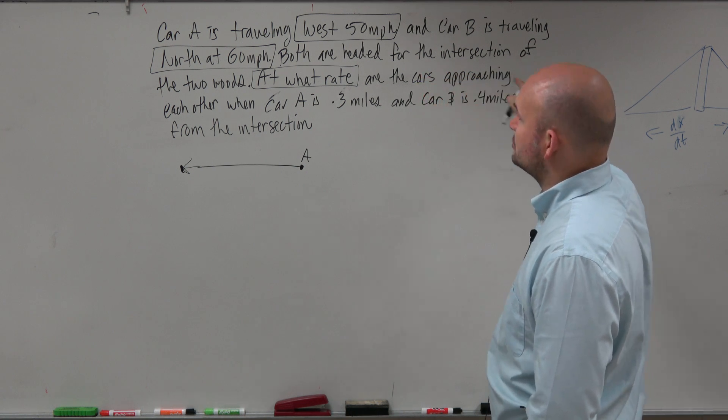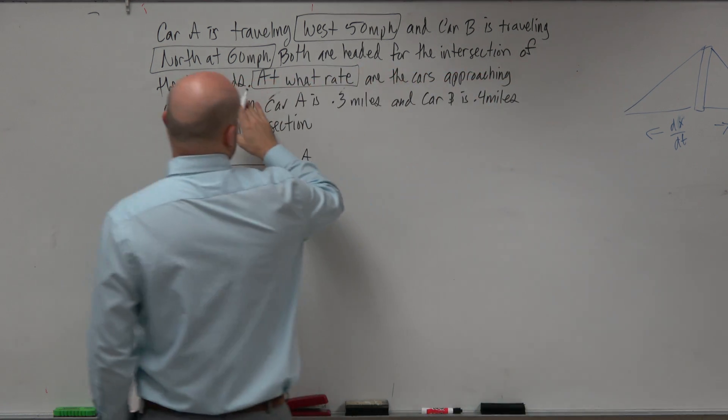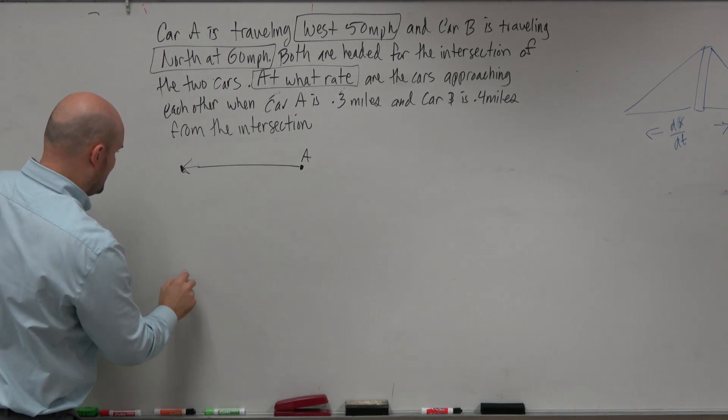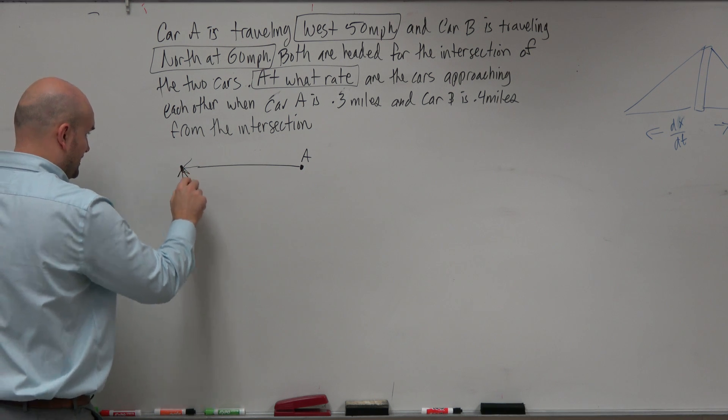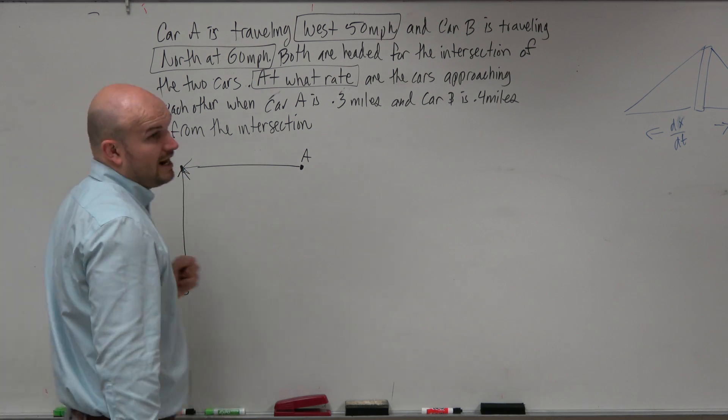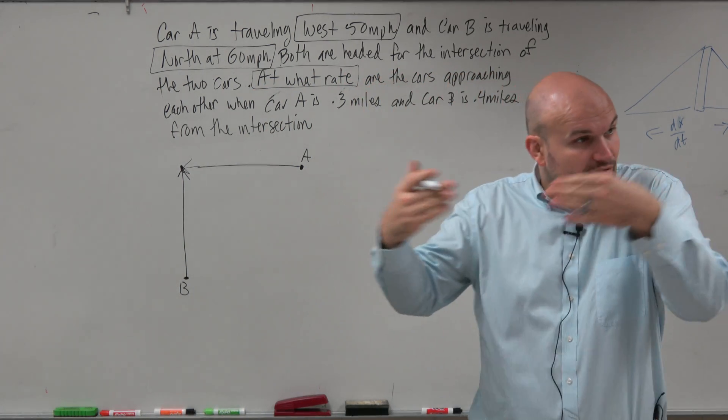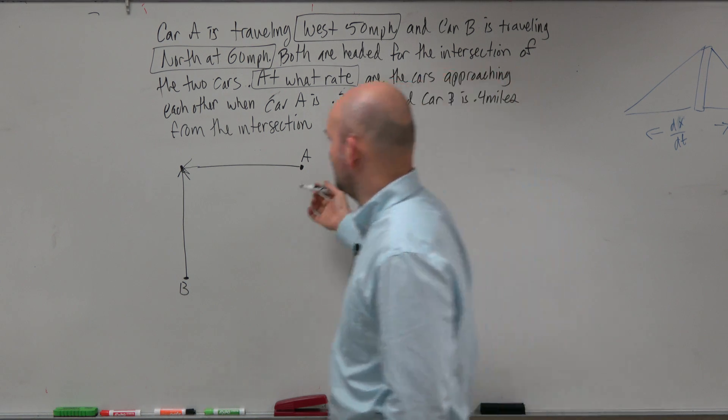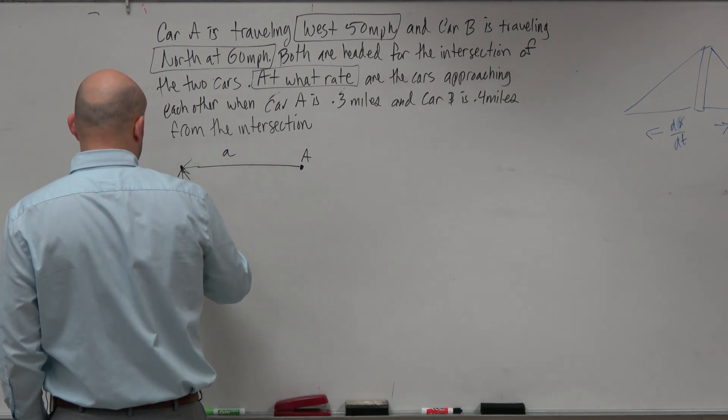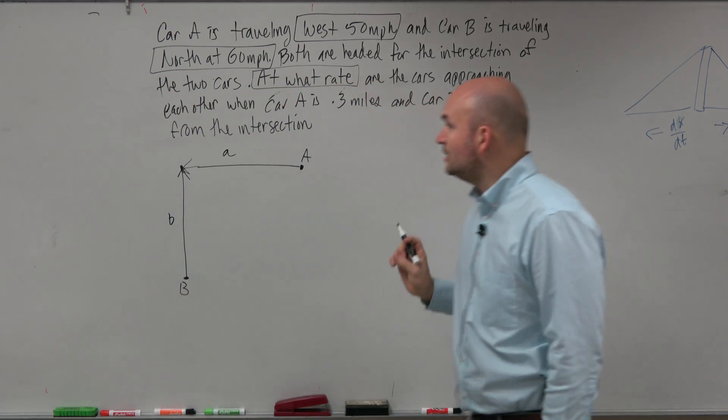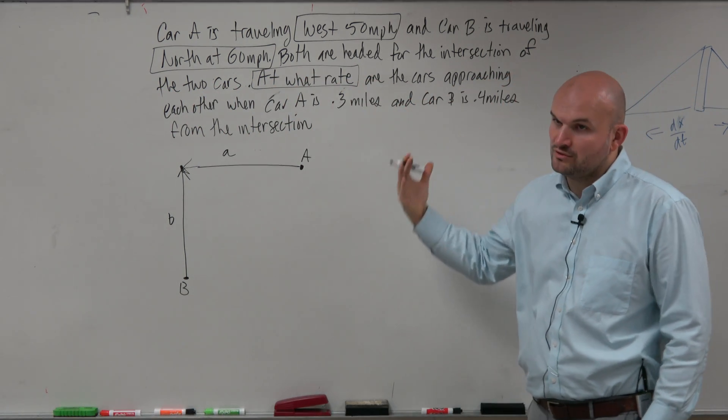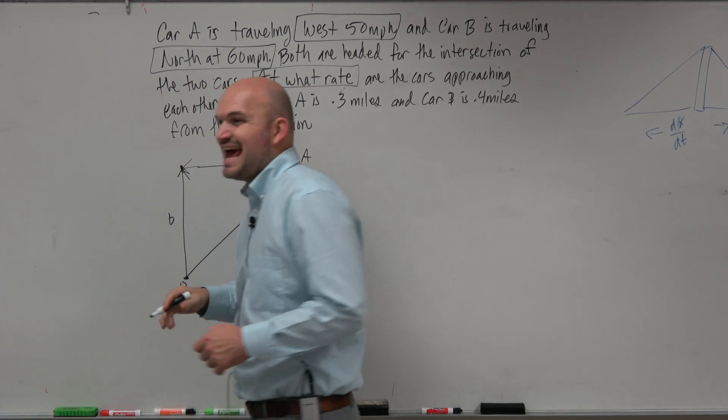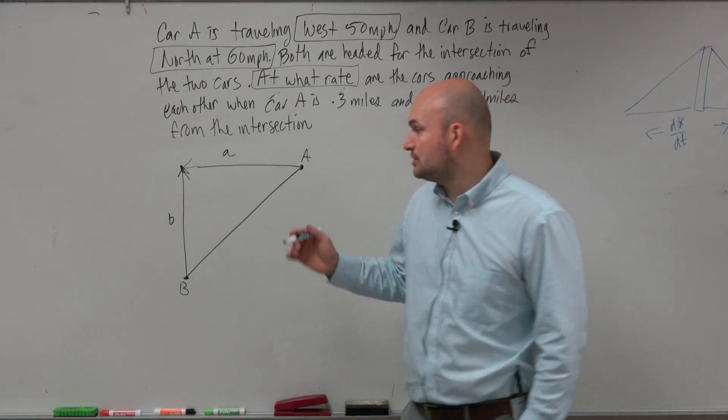At what rate are the cars approaching each other when both are headed for the intersection of the two cars. They're going to intersect, traveling right at each other. Now let's talk about some distances here that we have. Let's call this A, B. And the other important thing is, how far are the cars approaching each other? There's another relationship here. It's like they're an exact distance away from each other, and we'll call that C.